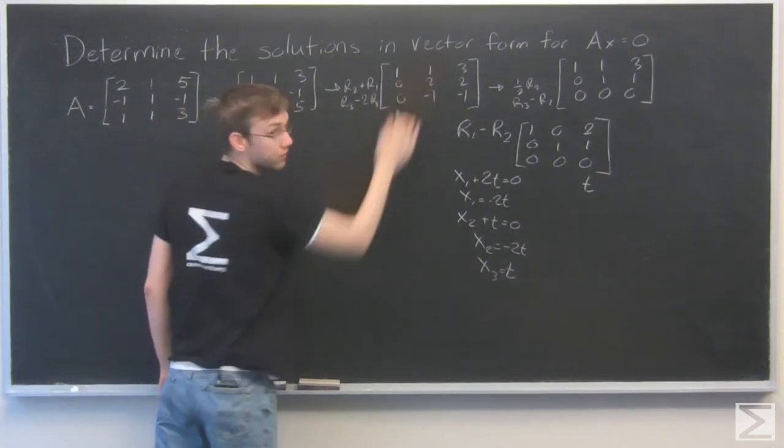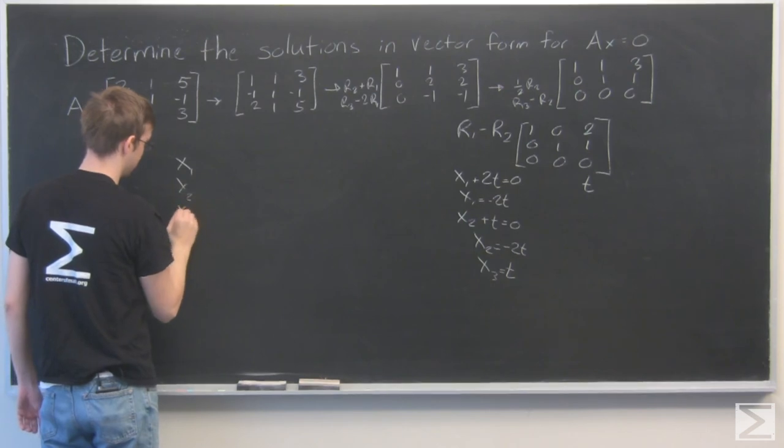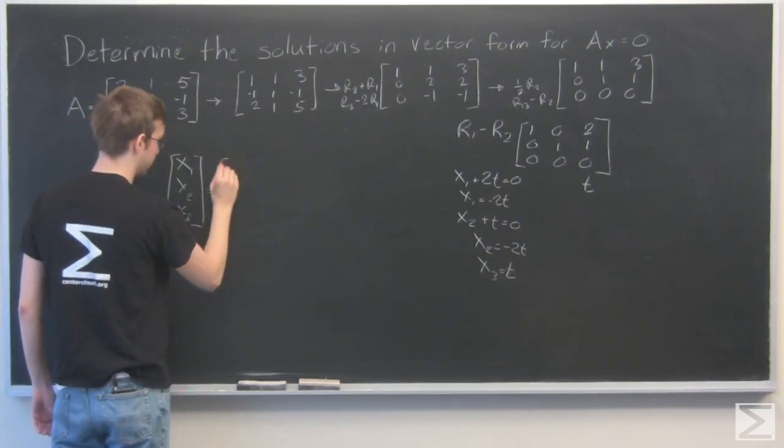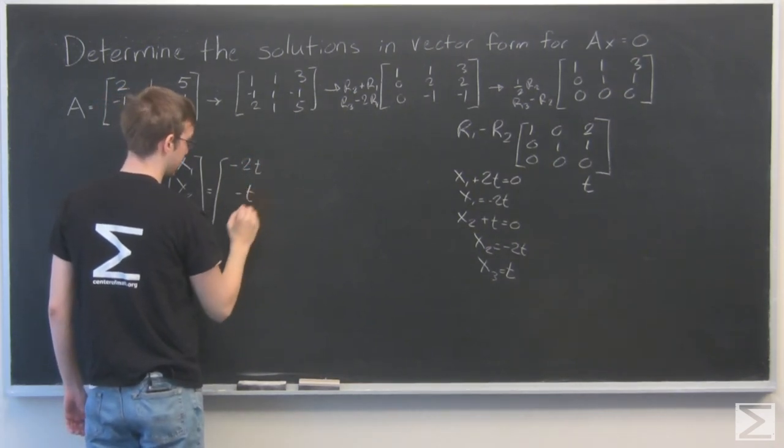We need to put it into vector form. So my vector will look like x1, x2, x3 as a vector, is equal to x1. So minus 2t, x2 is minus t, x3 is t.